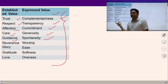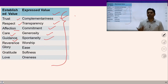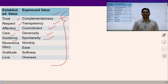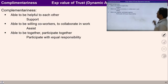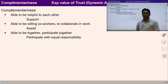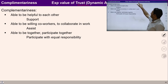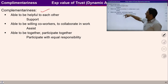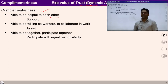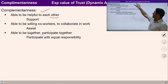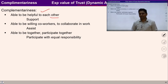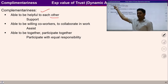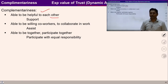Dynamic activities means these values are going to reflect in behavior. Let's start understanding all these expressed values one by one. Complementariness is an expressed value of trust. Complementariness means I am able to help and support the other person. If I have ensured the feeling of trust in myself, then this complementariness will be reflected in my behavior.